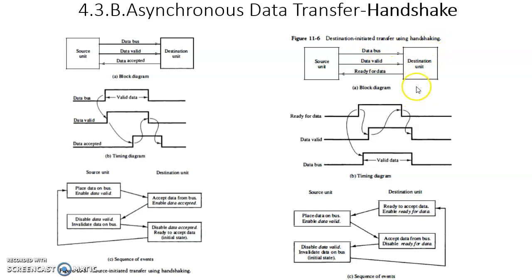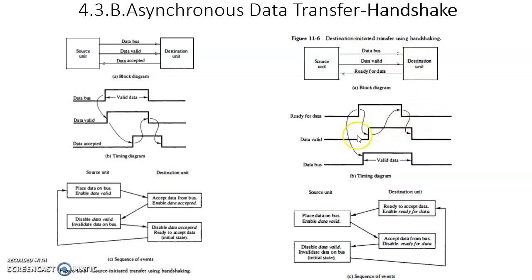In destination-initiated data transfer, the destination unit initiates the transfer by making the ready-for-data signal from low to high. After detecting this change, the source unit places valid data on the data bus and changes the data-valid signal from low to high. The destination unit then receives the valid data and disables the ready-for-data signal. As soon as the destination unit disables ready-for-data, the source unit removes the valid data and disables data-valid. These steps can be seen in the timing diagram. Handshake-controlled data transfer is much more reliable than strobe-controlled due to this acknowledgement.